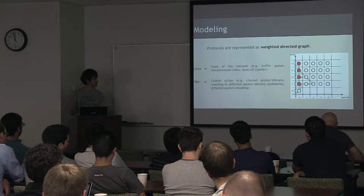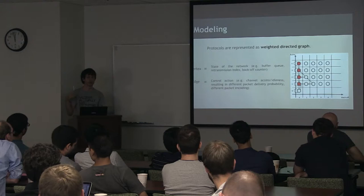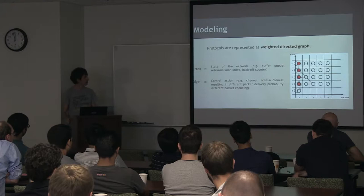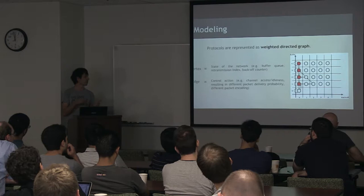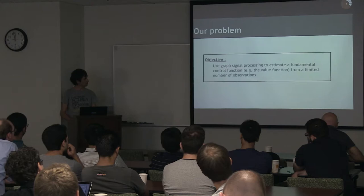Then, each edge represents a set of control actions. For example, the arrival of a new packet or the success of a transmission. And finally, the weight on the edges is the probability that this set of actions occurs.